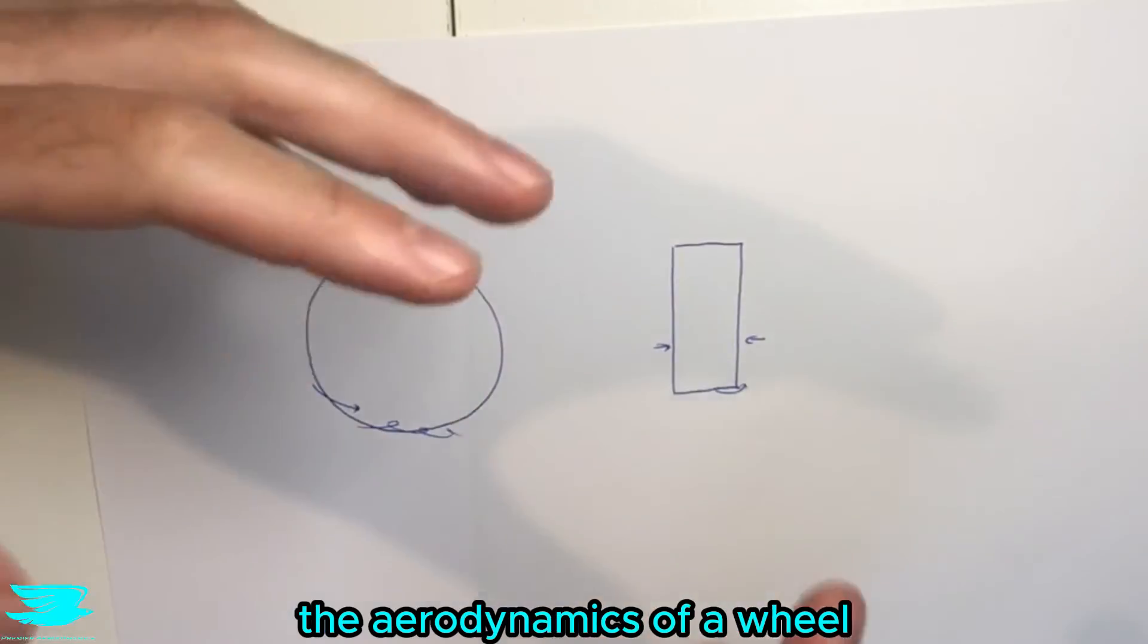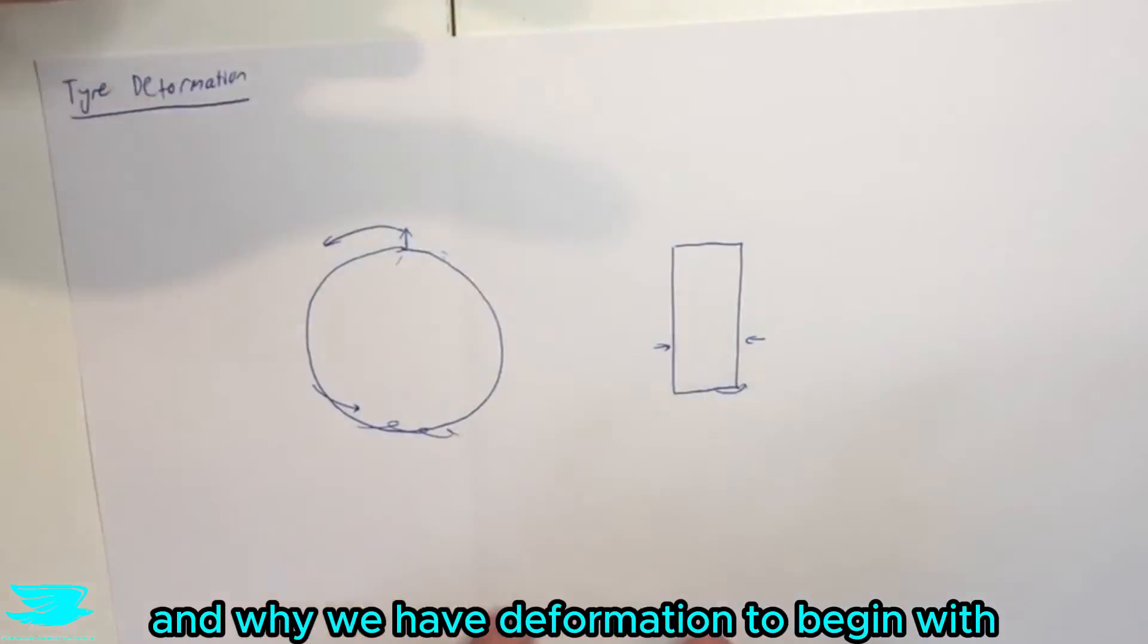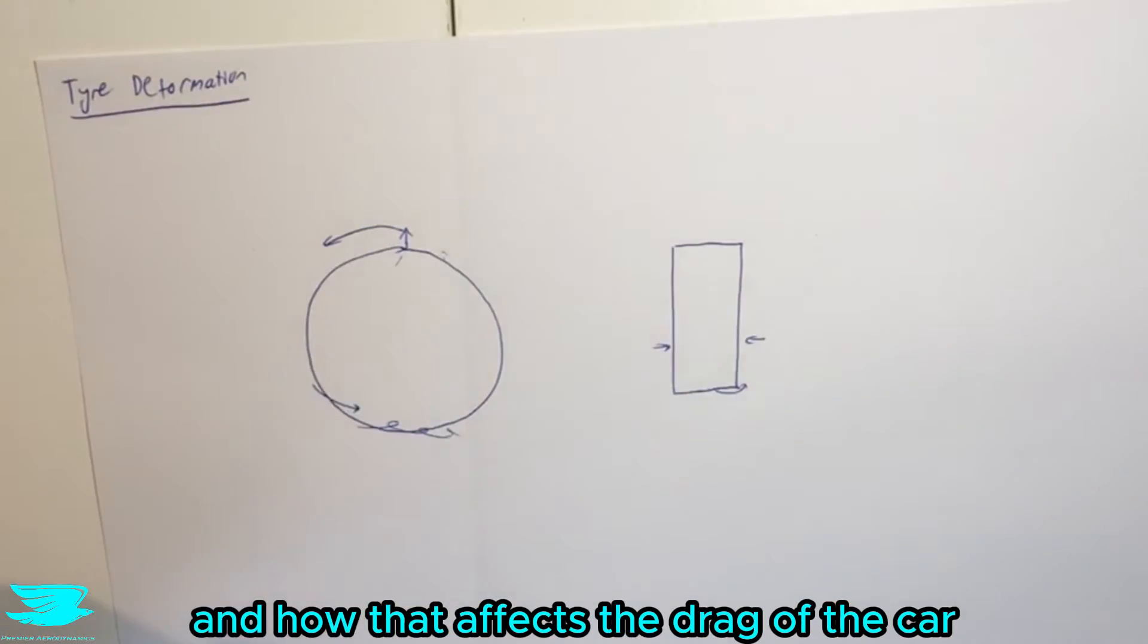So that is how tire deformation affects the aerodynamics of a wheel and why we have deformation to begin with and how that affects the drag of the car.